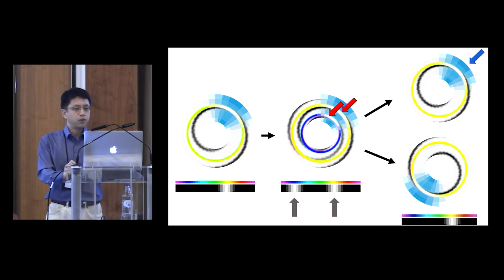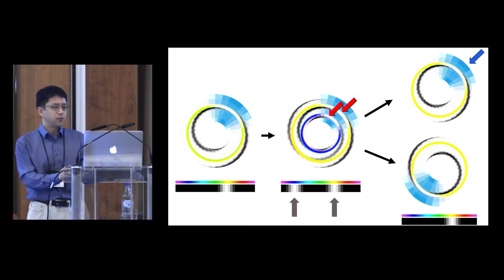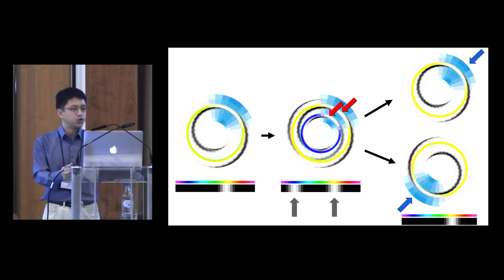If we now put the fly back in a scene with only one vertical stripe, there are two potential offsets that can represent the same heading, and one of them may win over the other randomly. So, in some cases, you would see that the bump offset is shifted 180 degrees from the original one.